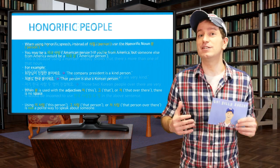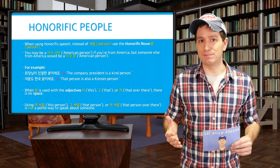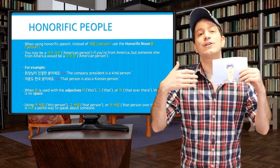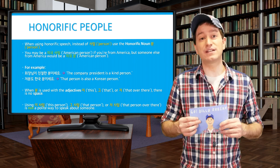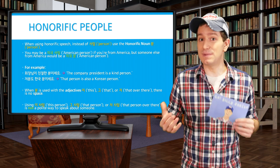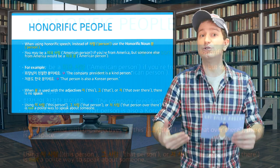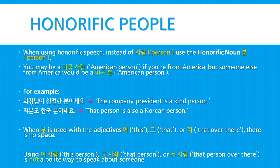We've learned about the counter 명 for counting people. But let's talk about the regular noun 사람, meaning person. If you're speaking honorifically about a different person besides yourself, it's better to use the honorific noun 분. So you can be a 미국 사람 if you're from America, but someone else would be a 미국 분. For example, 회장님이 친절한 분이세요 — The company president is a kind person. 저분도 한국 분이세요 — That person is also a Korean person. Note that when 분 is used with adjectives 이, 그, and 저, there is no space. Also, using 이 사람, 그 사람, or 저 사람 is not a polite way to speak about someone.